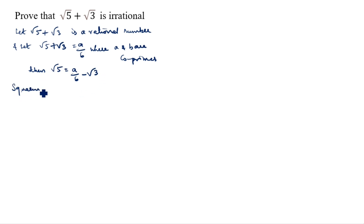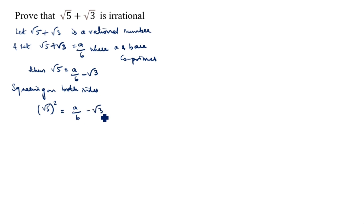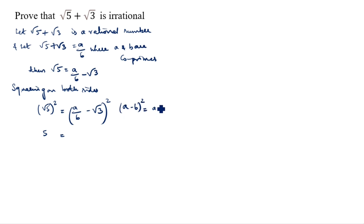Squaring on both sides: root 5 whole square equals a by b minus root 3 whole square. Root 5 squared is 5. For the right side, we apply the formula (a minus b) whole square equals a square plus b square minus 2ab.